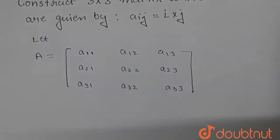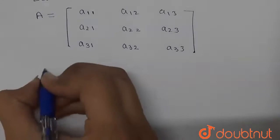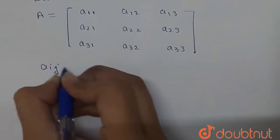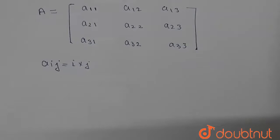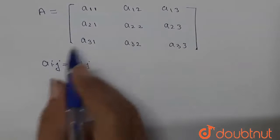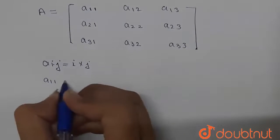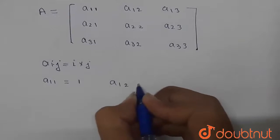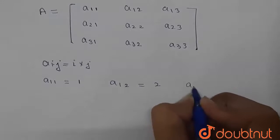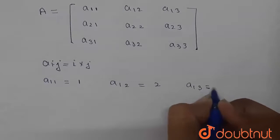Now let us look at the definition. So we are given that aij is given by i times j. So that means a11, when i is 1 and j is 1, will be 1 times 1, that is 1. Similarly, a12 will be 1 times 2, which is 2. And a13 will be 1 times 3, that is equal to 3.